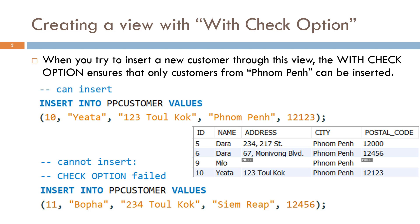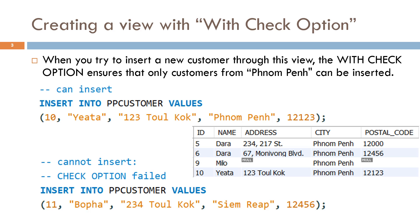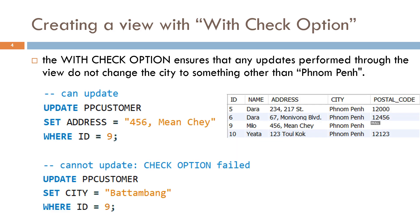We want to ensure that only customers from Phnom Penh can be inserted. The WITH CHECK OPTION also ensures that any update performed through the view does not change the city to something other than Phnom Penh. For example, we can execute: UPDATE PP_customer SET address = '424-56 Min' WHERE id = 9. But we cannot execute: UPDATE PP_customer SET city = 'Battambang' WHERE id = 9, because the view PP_customer only includes customers with city equal to Phnom Penh.